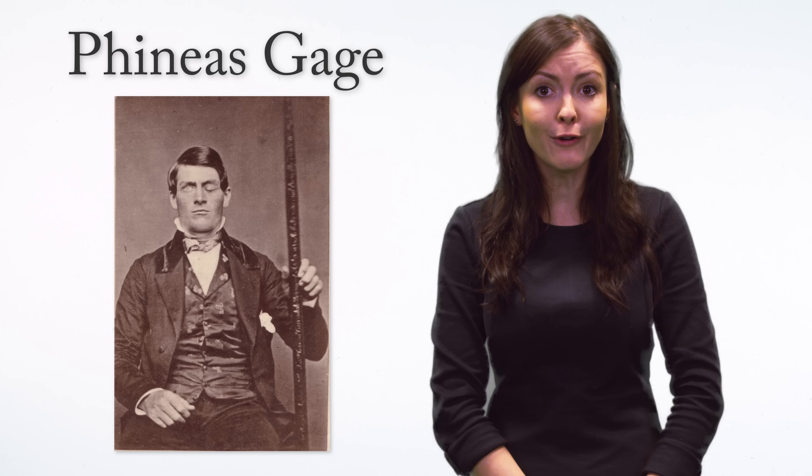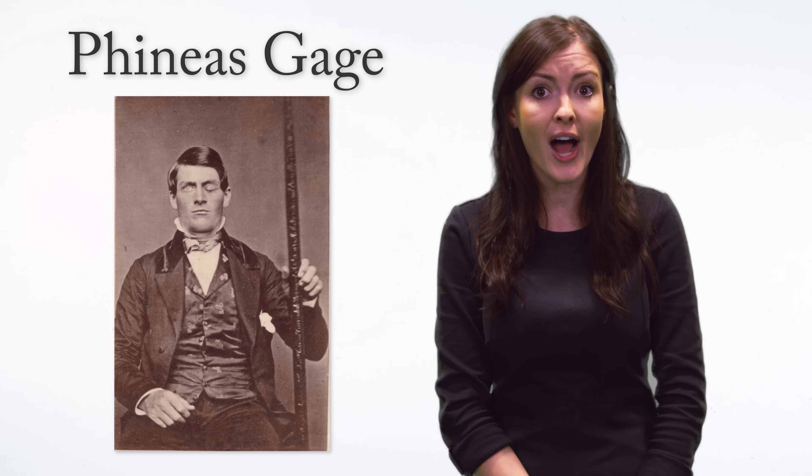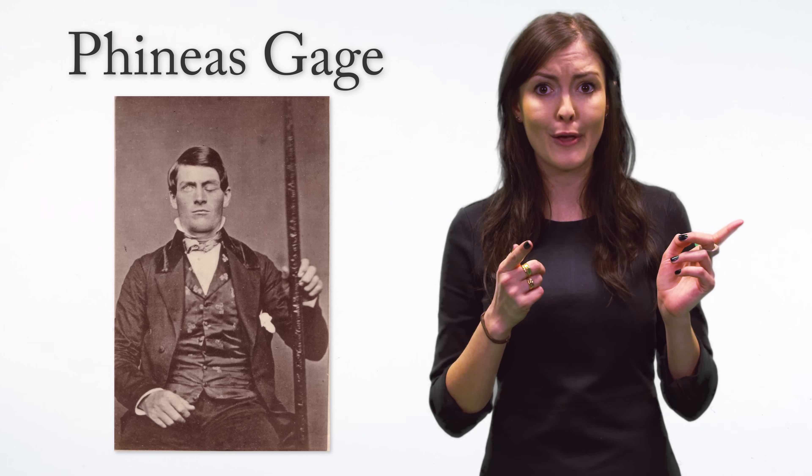Back in 1848, there was a pretty ordinary man who had an extraordinary accident. You've probably heard of Phineas Gage, the railroad foreman who had a one-meter iron rod blasted through his skull. The details are pretty graphic. Think bits of brains and skull going everywhere.